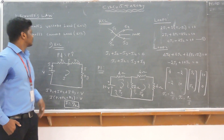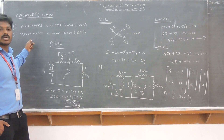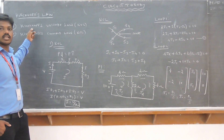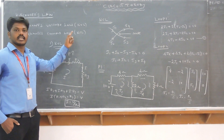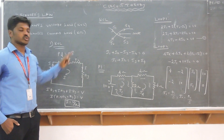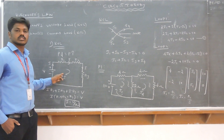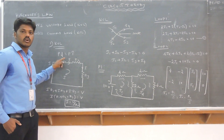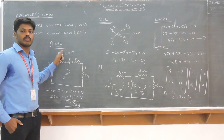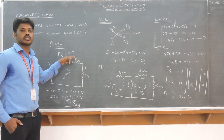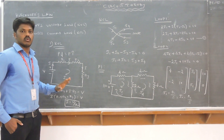There are two types of laws. The first one is Kirchhoff's Voltage Law and the second one is Kirchhoff's Current Law. Kirchhoff's Voltage Law is called KVL and Kirchhoff's Current Law is called KCL. For KVL, in a closed loop, the sum of the potential drops equals the sum of the potential rises, from Ohm's law.